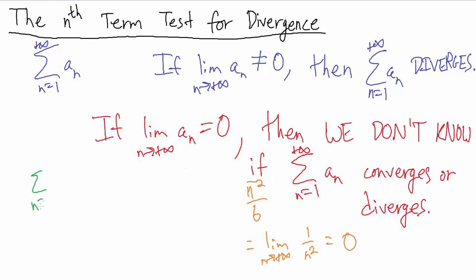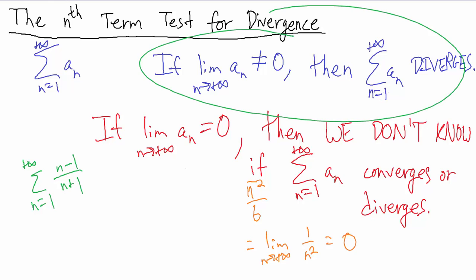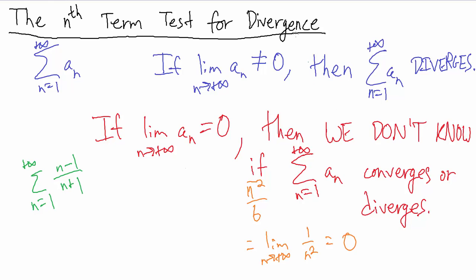Let's take a look at the sum from n equals 1 to positive infinity of (n minus 1) over (n plus 1). I want to point out that we're starting our series from 1 here, but it doesn't really matter — we can start from wherever we want, like 0, 2, or 3, as long as it doesn't give us something undefined. So n can start at really any number and all of this will still hold.